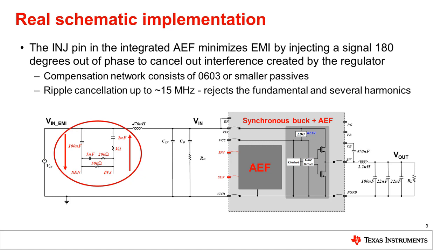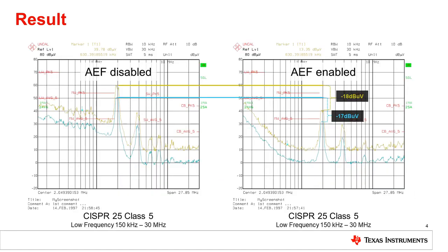Now let's check out what kind of results we can get with AEF — how much we can improve our EMI result and how much we can reduce our filter size. Here we can see test board results for low frequency conducted EMI to CISPR25 class 5 standards. Both tests are taken on the same board with the same small passive EMI filter, but the plot on the left has AEF disabled and the plot on the right has AEF enabled. We can see the fundamental frequency of 2 megahertz is attenuated by 17 to 18 dB microvolts and the second harmonic is attenuated by about 10 dB microvolts. We can also see the low frequency noise below the fundamental is greatly reduced as well. To get this kind of sub-harmonic attenuation we would need a lot of inductance and capacitance on the input filter, but the active EMI filter is easily able to achieve this performance.